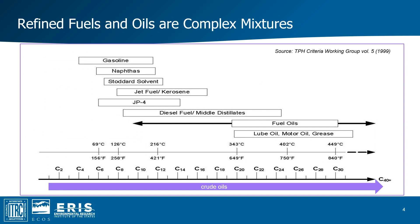Although the refining process helps to separate petroleum hydrocarbons by weight and number of carbon atoms, these refined fuels and oils are still complex mixtures. For instance, gasolines have been estimated to consist of 200 to 2,000 compounds. This chart shows the typical carbon ranges for several types of refined fuels and oils. You can see that gasoline has a range of 4 to 12 carbon atoms, while diesel fuel has a range of 8 to 24 carbon atoms. Heavier-end oils can range from typically 20 to over 30 carbon atoms, and crude oil can span from 1 to over 40 carbon atoms.